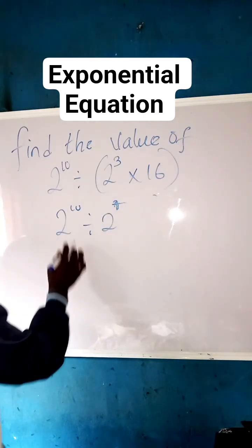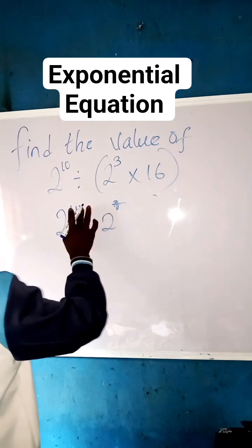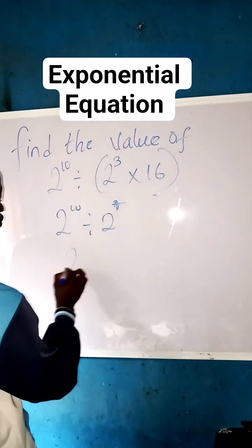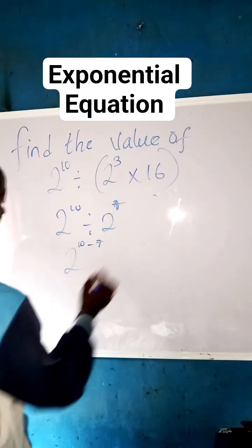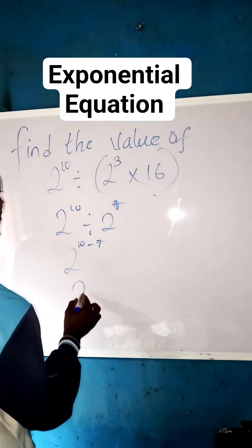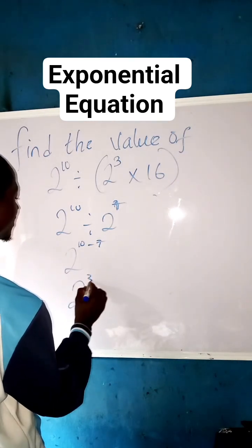Subtract the powers. So you say 2, you pick one 2, then we have 2 raised to power of 10 minus 7. So we have 2 raised to power of 3. 10 minus 7 is 3. This is the final answer.